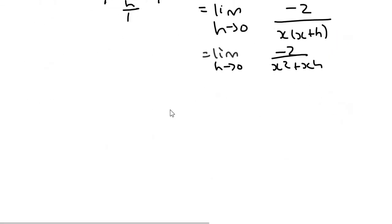Now we are at a position where we can let h become zero. And so that's going to become minus 2 over x squared plus x times zero. And that's going to be minus 2 over x squared.